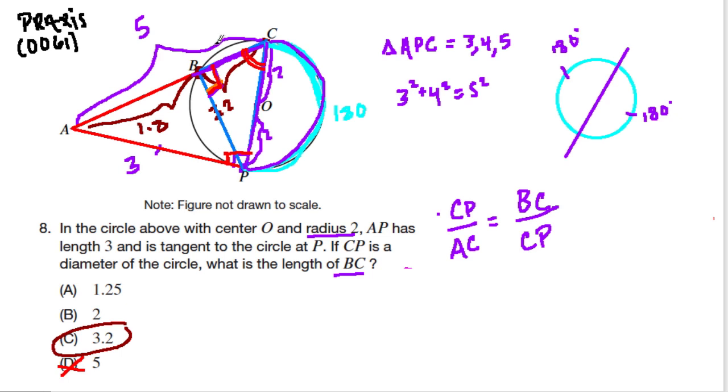So how do we, what do we do next? Well, we can do a lot of different things, but I'll solve it as CP is 4 over 5, which is AC, equals BC over CP, which is 4. Multiply both sides by 4 and we get 16 over 5 is BC, which equals 3.2. So two different ways to solve the same problem.